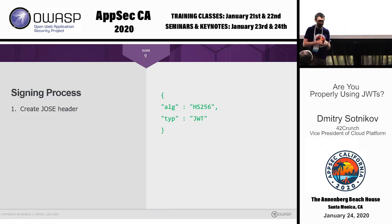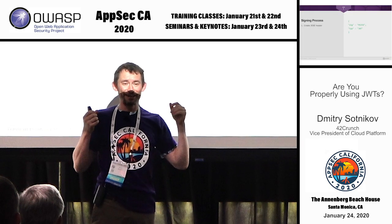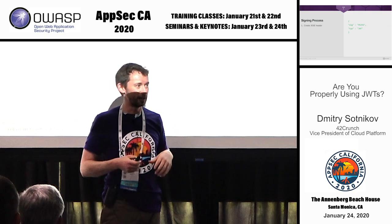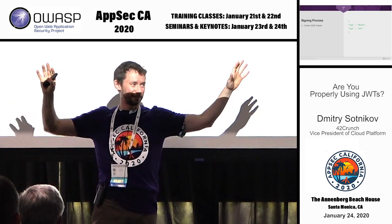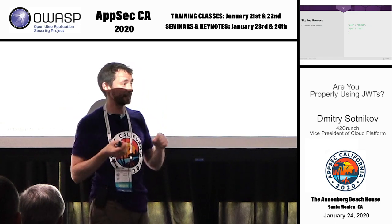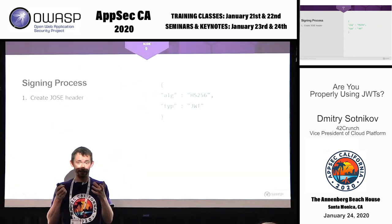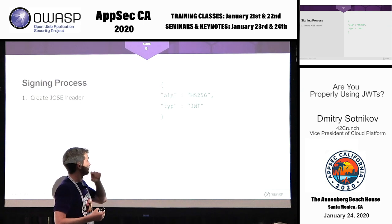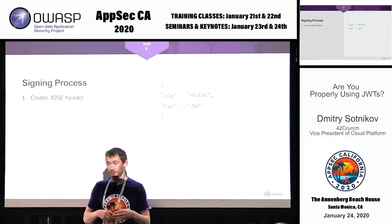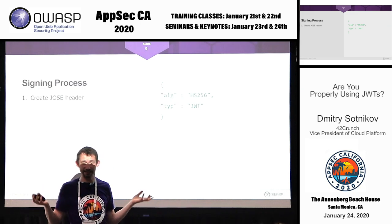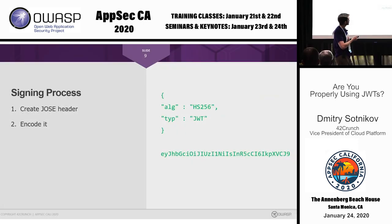The resource can verify the signature. The resource needs to know what algorithm and key were used. In JWT tokens, they decided to add a header to the payload that tells what kind of data is being transferred and what kind of signature is being used. In most cases the type will be JWT, but you can sign and send any application-specific data, or even sign an image — the standard is fine with that.